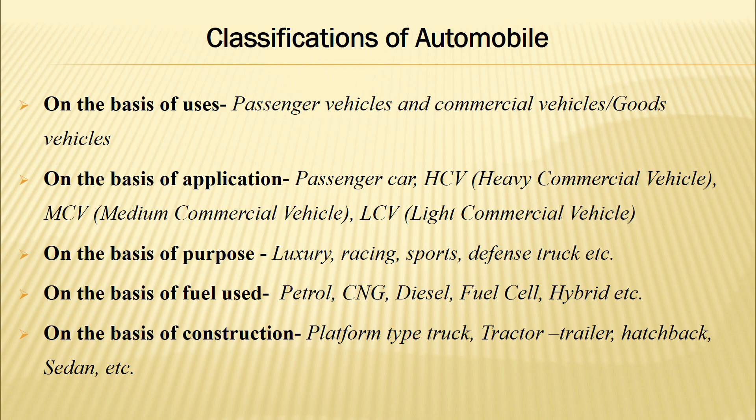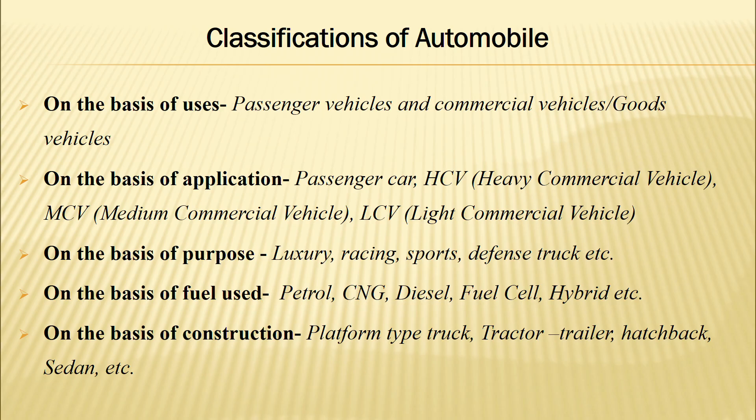The next classification is on the basis of fuel used. If petrol is used, it is a petrol vehicle; if CNG is used, it is a CNG vehicle; if diesel, it is a diesel vehicle. If a fuel cell is used, it is a fuel cell vehicle; and if combined power is used, it is known as a hybrid vehicle.